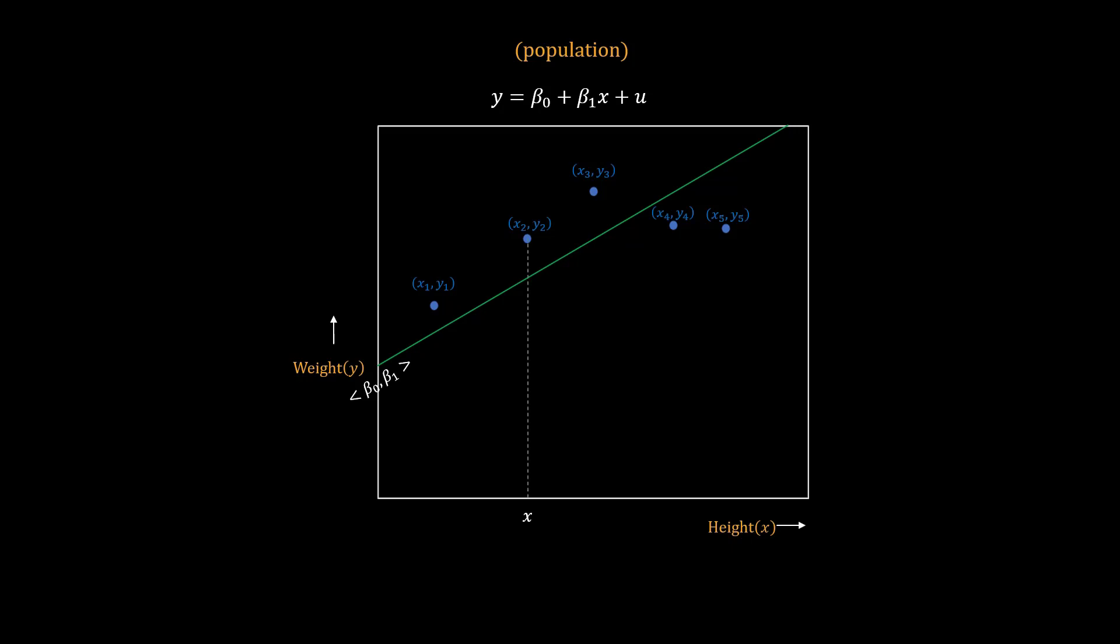Now for every height x, the weight y is composed of two parts. The first part is called the systematic part, which is explained by the height. It means that height systematically influences the weight of a person across the entire population through this linear dependence. The leftover part, which is not explained by height, is captured by the error term u, which is also called the idiosyncratic part of y. The idiosyncratic part captures the weight impact of all other nuances of that specific individual, except height, such as eating habits, diseases, lifestyle, etc., which acts as either a positive or negative add-on to the systematic component. Now this add-on is unique for every person.